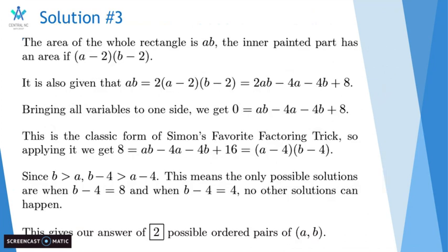So the area of the whole rectangle is ab, and the inner painted part has an area of a minus 2 times b minus 2, because of the one-foot-width border. It is also given that the area of the whole rectangle is twice the painted part. So ab equals 2 times a minus 2 times b minus 2, which equals 2ab minus 4a minus 4b plus 8. Bringing all variables to one side, we get 0 equals ab minus 4a minus 4b plus 8.